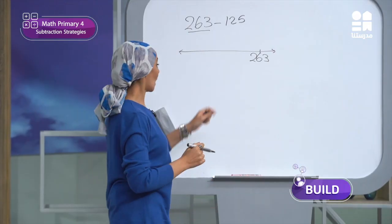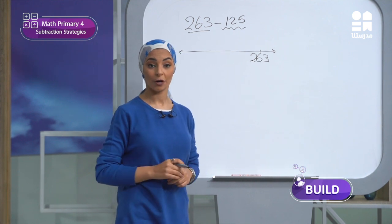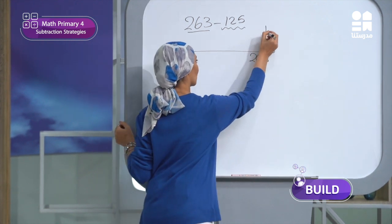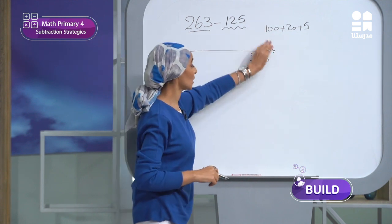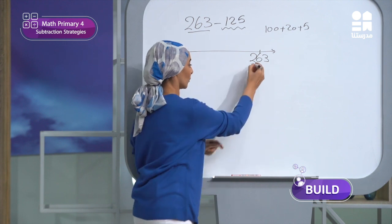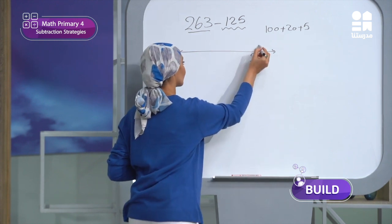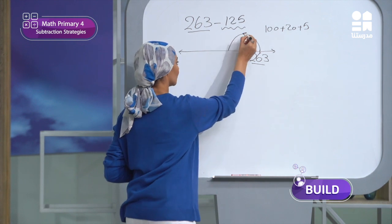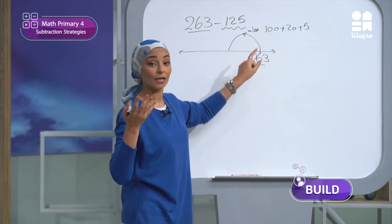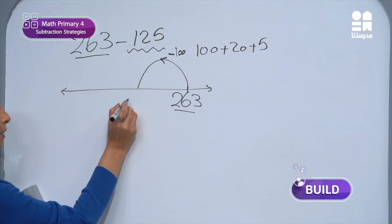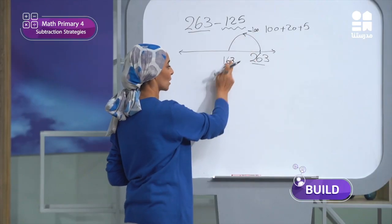Then I will write the smaller number in expanded form: 125 becomes 100 plus 20 plus 5. I will subtract each part from the biggest number. So 263 minus 100: I will jump 100 to the left. 263 minus 100 equals 163.